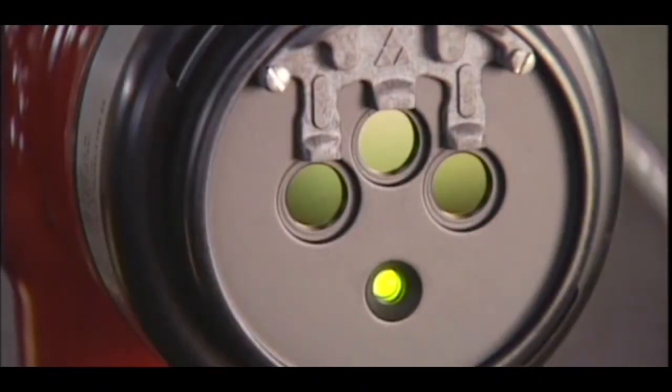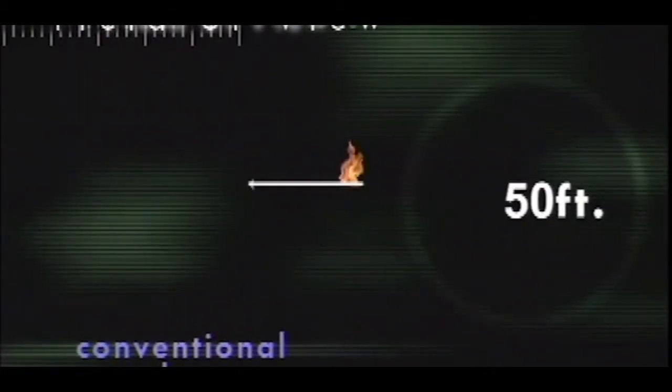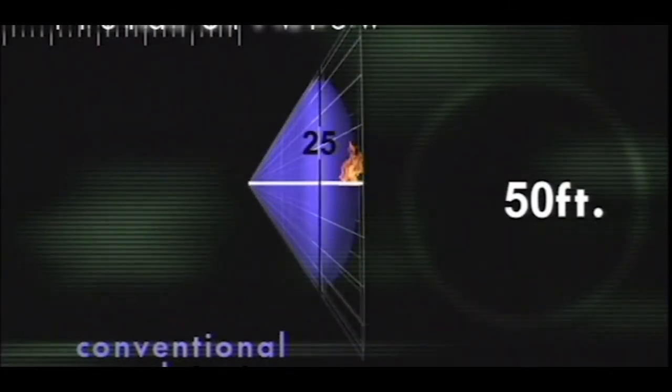Protector has a consistently larger area of coverage than any other detector in the world. Here's what we mean: the maximum on-axis range of a conventional detector's field of view is about 50 feet. Off-axis, these detectors lose sensitivity at about 25 feet.